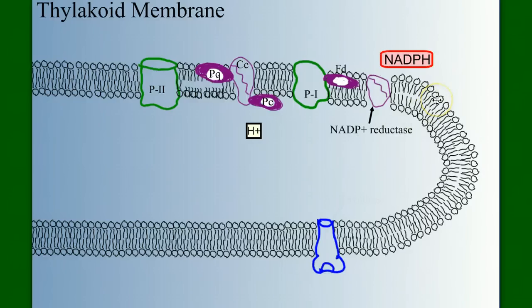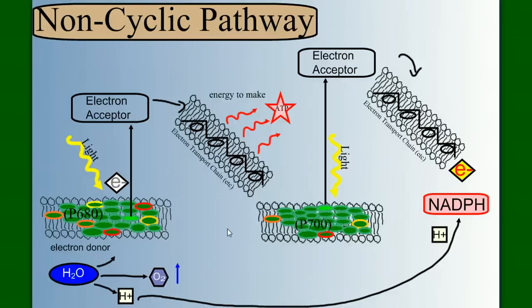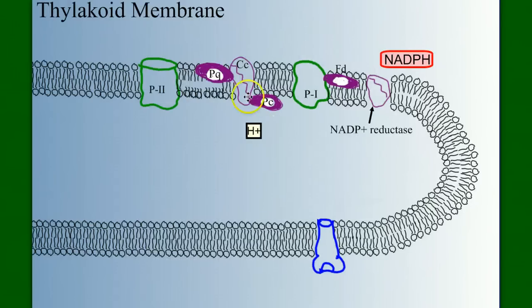This NADPH is carrying that high-energy electron and will deliver it to the Calvin cycle. But remember, this video wasn't about making NADPH. It was about making ATP. And if we look back, when we look at this diagram, we see that it was during the first electron transport chain that we said energy was given off to make ATP. In this diagram, when we went down the first ETC, all we did was pump a proton from the outside to the inside.